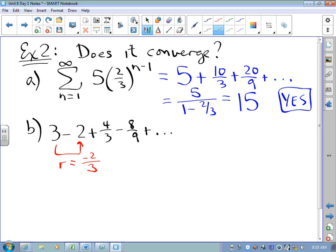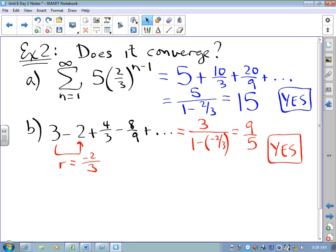r is any term divided by the 1 before it. Is the absolute value of r less than 1? And the answer is yes. And so, we can find the sum. The sum is the first term over 1 minus r. That's 3 divided by 5 thirds. That's 3 times 3 fifths. That's 9 fifths.